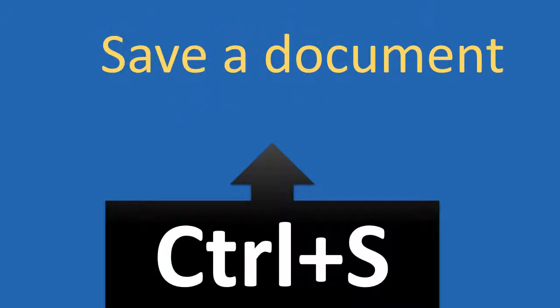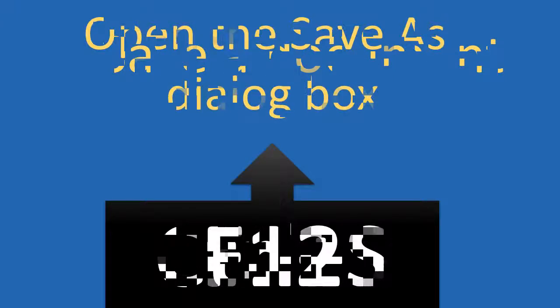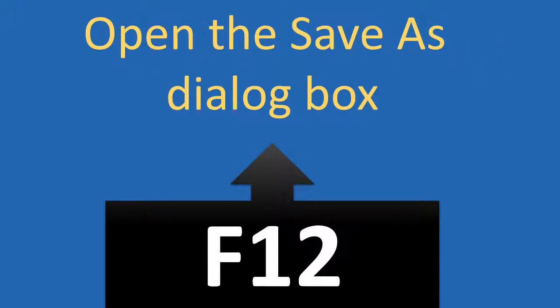CTRL plus S: used to save a document. F12: used to open the Save As dialog box.